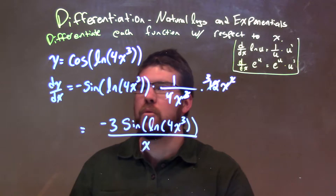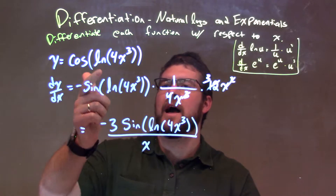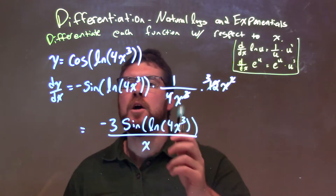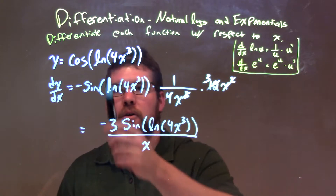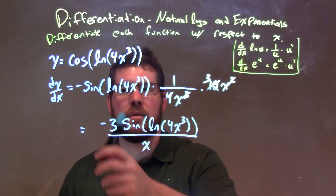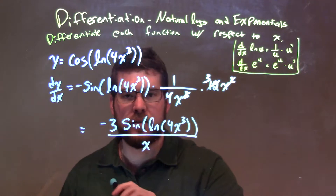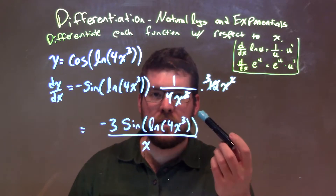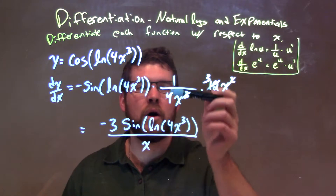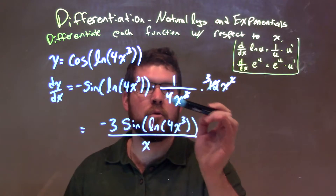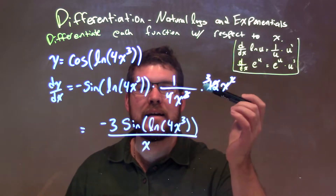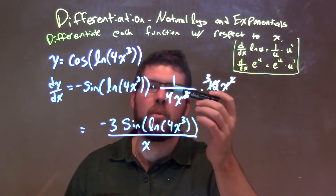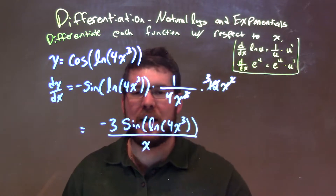Let's recap. We're doing y equals cosine of the natural log of 4x to the third power. Derivative of the outside first — derivative of cosine is negative sine — so negative sine of, keeping the inside the same. Then multiply that by the derivative of the inside. Derivative of the inside: we have natural log, so it's just 1 over what's inside the natural log, 4x to the third, times the derivative of that inside part, 4x to the third. The derivative of 4x to the third is 12x squared.